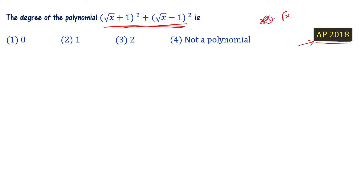Generally, for a polynomial, the powers of x must be positive integers. Here, √x means x^(1/2), which is not a positive integer — it's a rational number. So this expression with √x does not look like a polynomial directly. But let's simplify and see what happens before concluding.